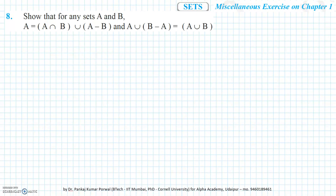In this question there are two parts. First, we have to show that A equals A intersection B union A minus B, and in the second part we have to show that A union B minus A equals A union B. Both parts are very easy to show using Venn diagrams.